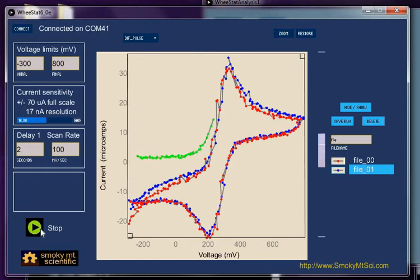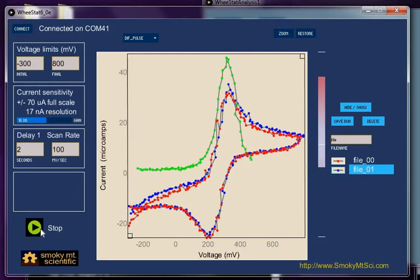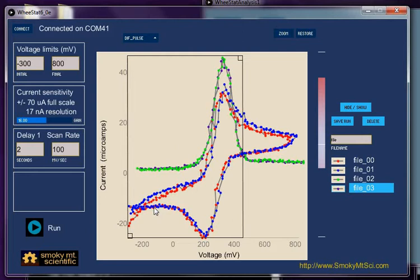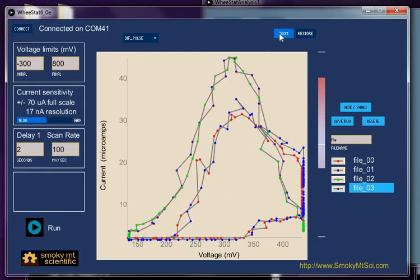All right so here comes a differential pulse experiment. We'll run that again just so we have two of each. Once this data acquires I want to show you that we have a zoom feature. If you have a specific part of your voltammogram that you're interested in looking at you can grab this little box up here in the corner and drag that over and when you hit this zoom it zooms in on that part of the data.